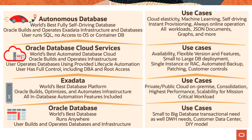Let's now look at the use cases for these services. Autonomous database is the world's best fully self-serving database. Oracle builds and operates Exadata infrastructure and databases. The user runs SQL without any access to the operating system or the container database. This is useful for customers who want the elasticity of the cloud, customers with machine learning workloads, and customers who do not want to spend too much time tuning code and need instant provisioning.